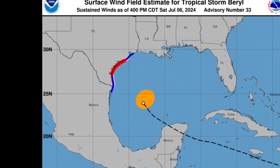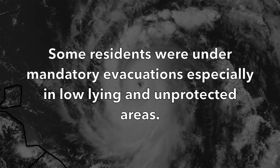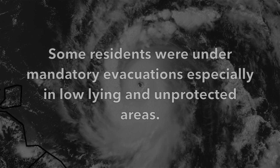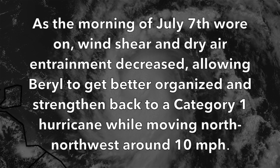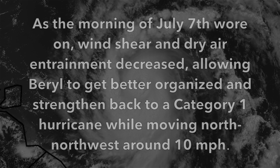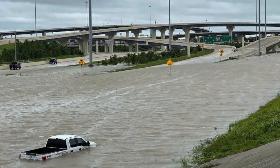On July 6th, the coastal areas between Corpus Christi and Sargent were upgraded to a hurricane warning, and remaining affected areas were upgraded to a tropical storm warning. A storm surge warning was put into effect from Padre Island to San Luis Pass, including Corpus Christi Bay and Matagorda Bay. Some residents were under mandatory evacuations, especially in low-lying and unprotected areas. Airlines delayed or canceled flights, and Amtrak canceled and suspended operations on July 7th and 8th. As the morning of July 7th wore on, wind shear and dry air entrainment decreased, allowing Beryl to re-organize and strengthen back to a Category 1 hurricane moving north-northwest at around 10 miles per hour. At 4 a.m. Central Daylight Time on July 8th, Hurricane Beryl made landfall near Matagorda, Texas, with maximum sustained winds of 80 miles per hour and a minimum central pressure of 979 millibars.